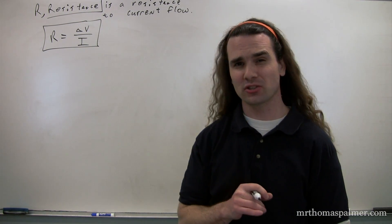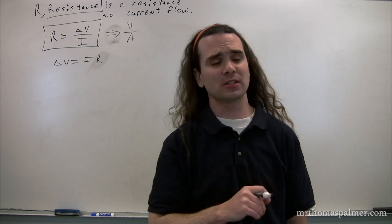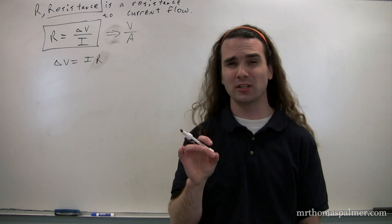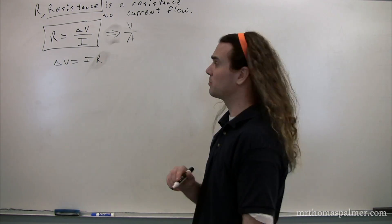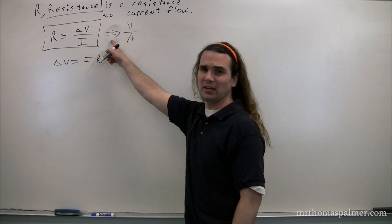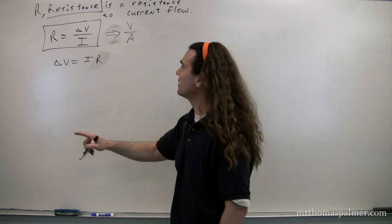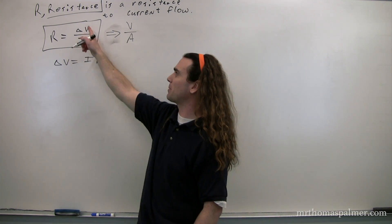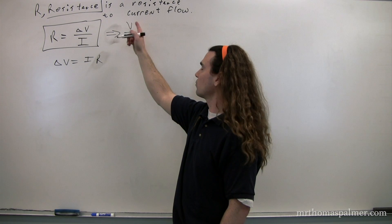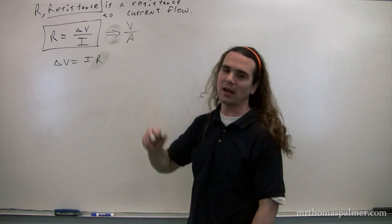Usually you see it as the electric potential difference equals the current times the resistance. Bobby, why don't you help me figure out the dimensions for resistance? Delta V is electric potential difference, and the dimensions for that are volts. Current is in amps, so resistance would be in volts per amp. So resistance equals the electric potential difference over current, or volts per amp. This arrow just means that this leads to that — we can get the dimensions: volts per amp.